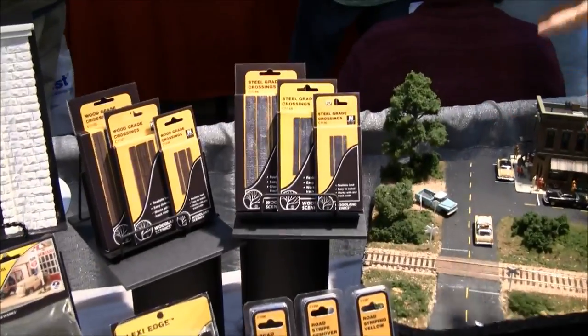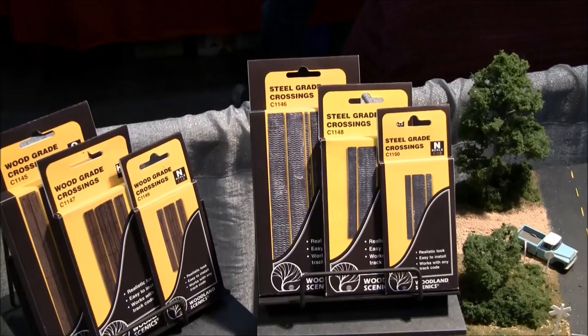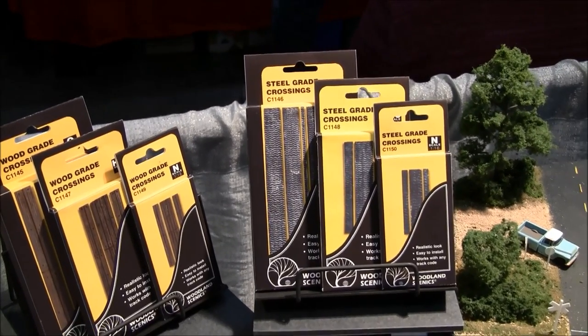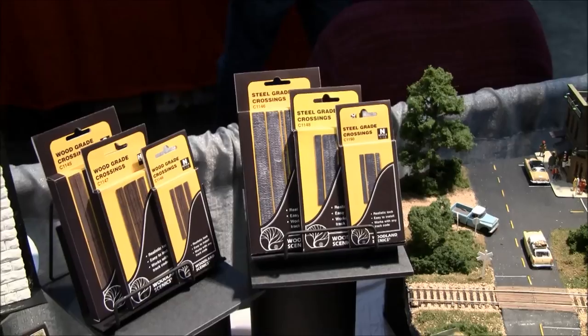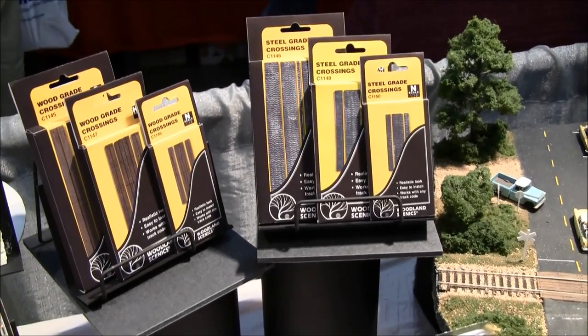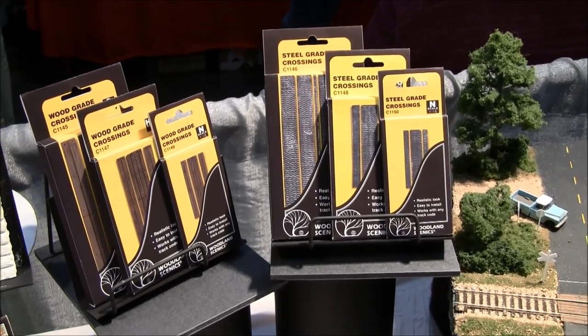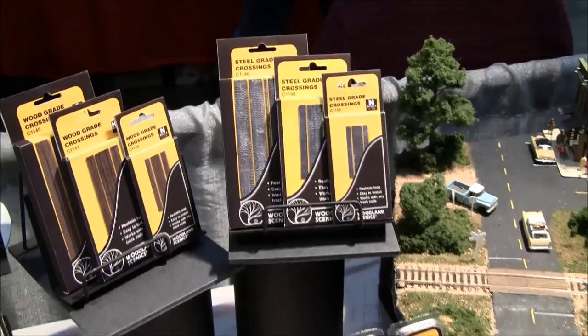We also have our new grade crossings, we have them in wood and steel. They work for N, HO, and O scales. What's really nice about these is that it's a complete kit, they're ready to install and they also come with shims so they work with any code track.